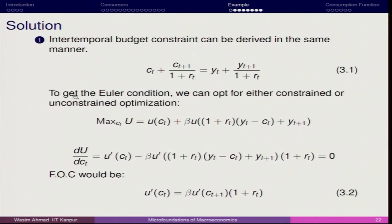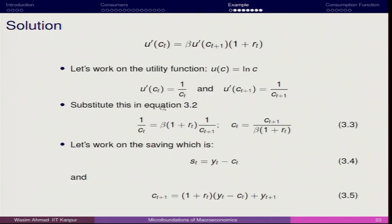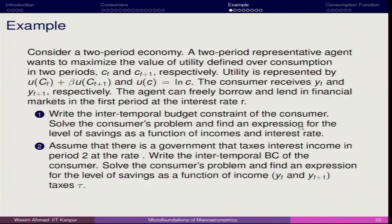To get the Euler condition, we solve through constrained or unconstrained optimization. We solve for Ct+1 and maximize: max Ct equals U(Ct) plus beta times U(1 plus Rt times (Yt minus Ct) plus Yt+1). Taking Du upon DCt, the marginal utility of Ct minus beta times U'((1 plus Rt)(Yt minus Ct) plus Yt+1) times 1 plus Rt equals zero. This part becomes Ct+1. So we get the Euler condition: marginal utility of current consumption equals marginal utility of future consumption multiplied by beta times 1 plus Rt.